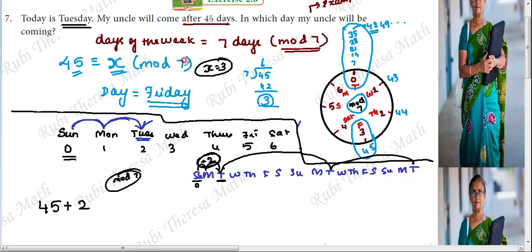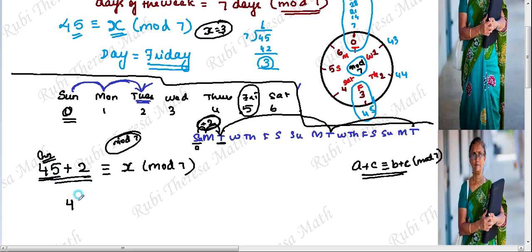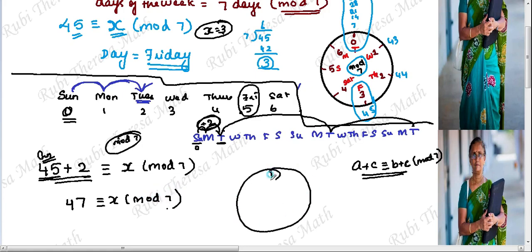The x value is 3. Using the theorem: if a and b are congruent to the same mod value, you can add to them. So 3 plus 2 is 5. Friday is the answer. We can also do 45 plus 2 equals 47, then 47 mod 7. Sunday is 0, so 0 is Sunday — and 47 mod 7 equals 5, which is Friday.